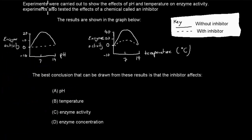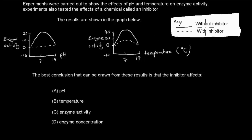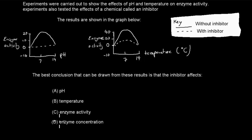The next question: Experiments were carried out to show the effects of pH and temperature on enzyme activity. Experiments also tested the effects of chemicals called inhibitors. Results are shown in the graph. Here is the enzyme activity vs pH, with two different enzymes shown — one without inhibitor and one with an inhibitor. The question is: The best conclusion that can be drawn from the results is that inhibitors affect A. pH, B. temperature, C. enzyme activity, or D. enzyme concentration?